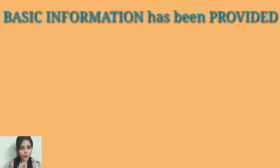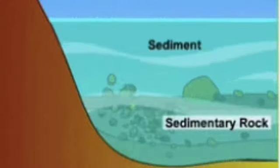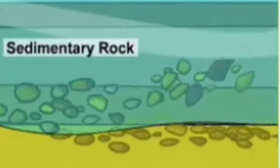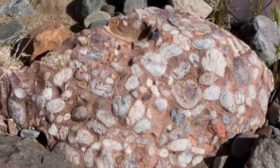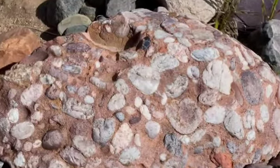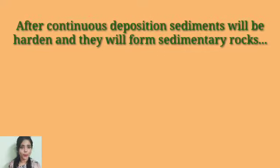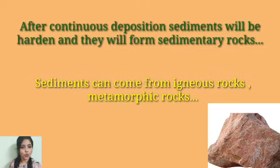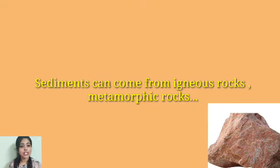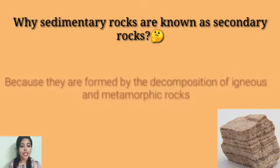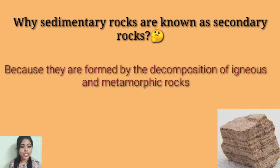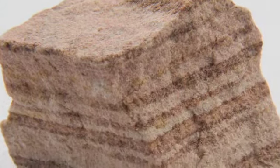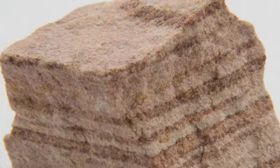Through the sedimentation process, when sediments are deposited, after a certain period of time that sediment will harden and form a rock structure — that structure is known as sedimentary rock. These sediments can come from igneous rock, metamorphic rock, and so on. That is why sedimentary rock is also known as secondary rock, because the rock particles are derived from igneous rock or any other rock.